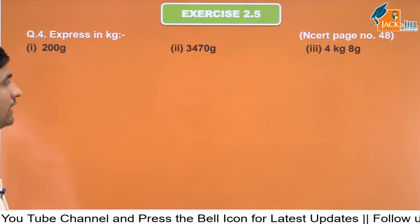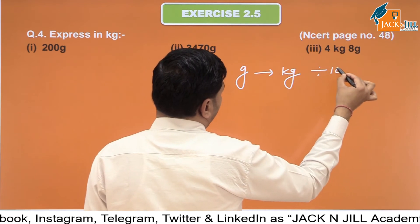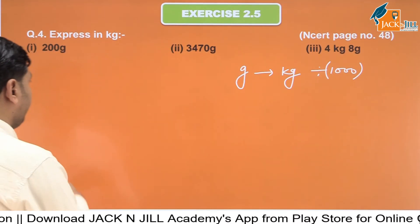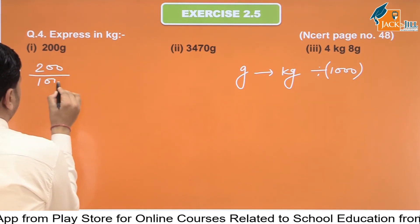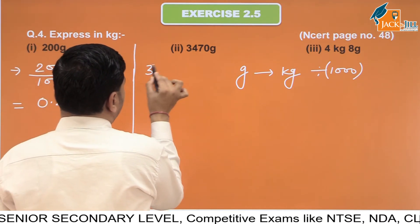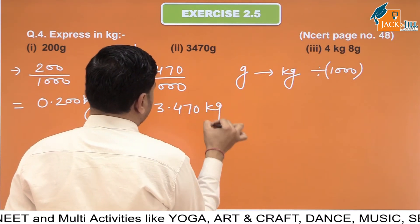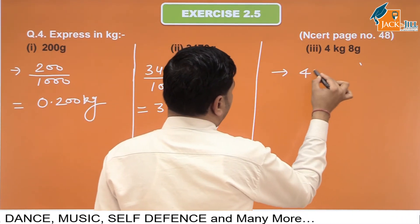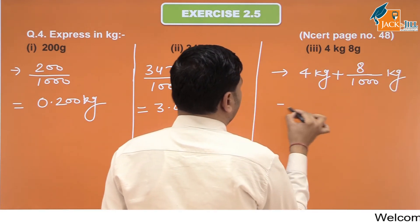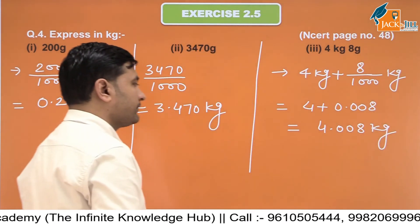Next: Gram को kilogram में change करना है। जैसे meter को kilometer में change करने के लिए 1000 से divide करते हैं, उसी तरह gram को kilogram में change करने के लिए 1000 से divide करेंगे। तो 200 upon 1000 = 0.200 kg, 3470 upon 1000 = 3.470 kilogram, और 4 kilogram 8 gram के लिए 4 + 8 upon 1000 = 4 + 0.008 = 4.008 kilogram।